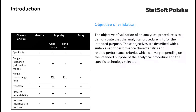As per ICH recommendations, the objective of validation of an analytical procedure is to demonstrate that the analytical procedure is fit for the intended purpose. These objectives are described with a suitable set of performance characteristics and related performance criteria, which can vary depending on the intended purpose of the analytical procedure and the specific technology selected.